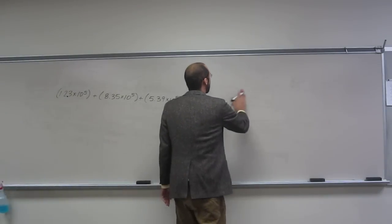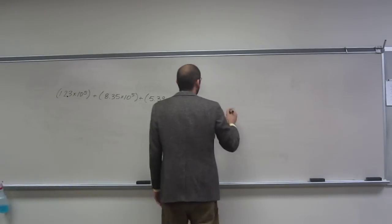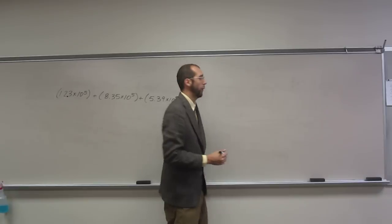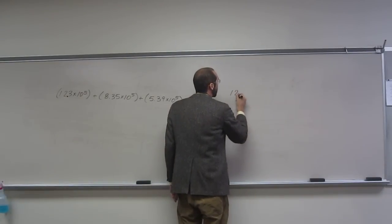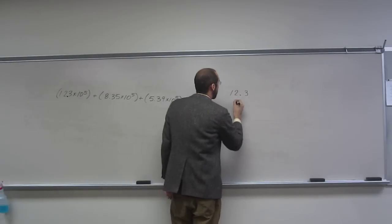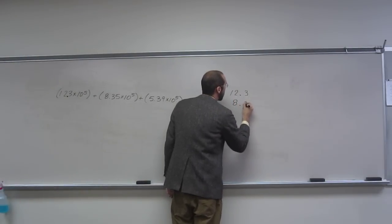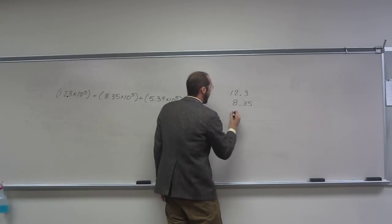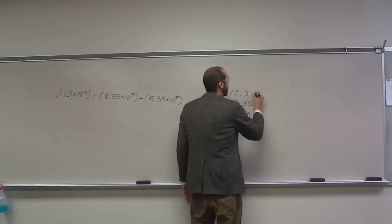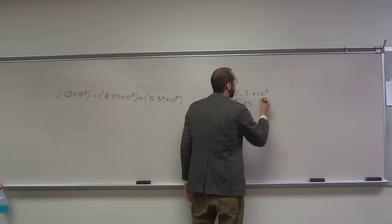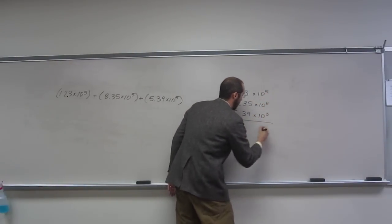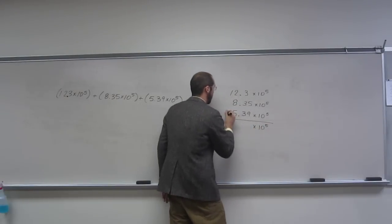So now the easiest way to do this since they're all at that common 10 to the 5th is you can do how we did them in class, just add them up relative to their decimal point. So when we do that we get 12.3 and remember we want to put the decimal point right underneath this first one, 8.35 and 5.39. So all of these are to the common times 10 to the 5th. So we really don't have to worry about that portion of the answer because it's going to be times 10 to the 5th as well.